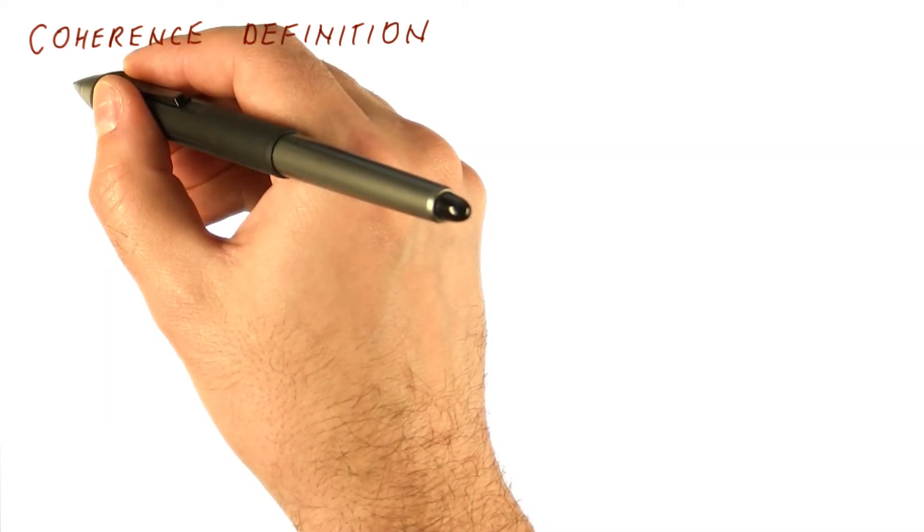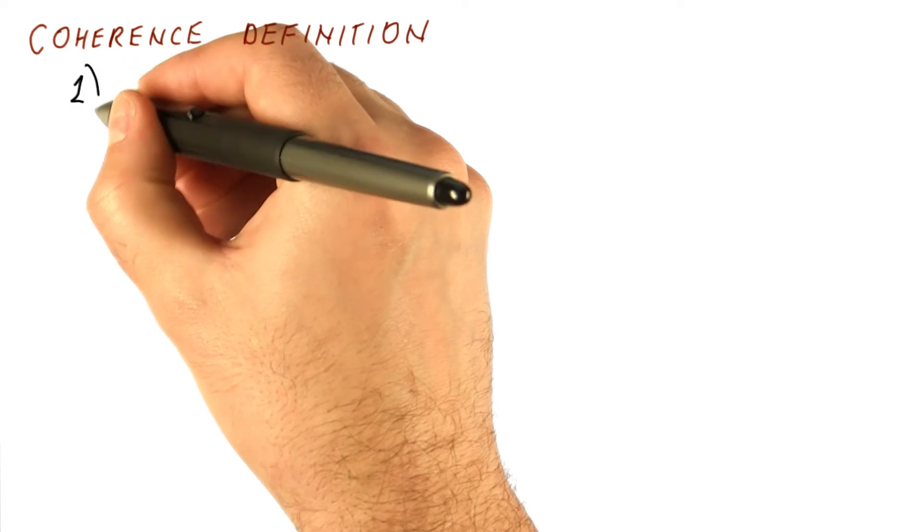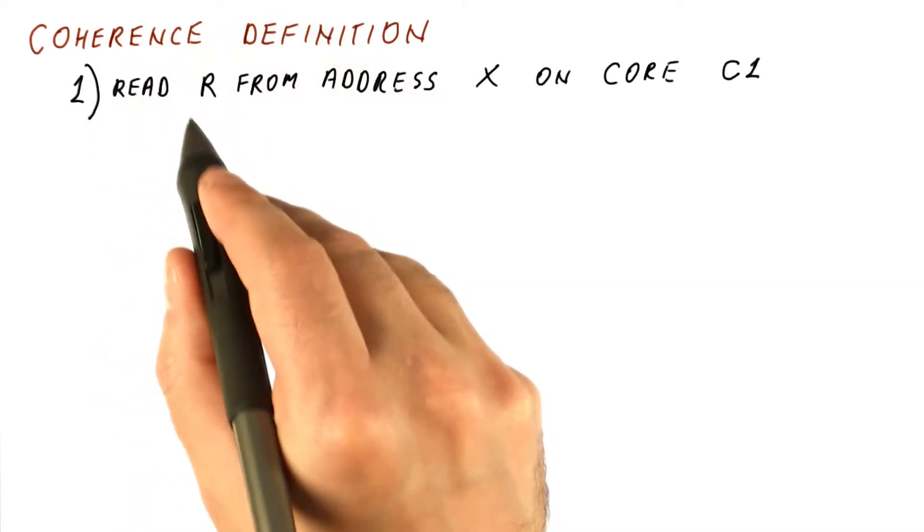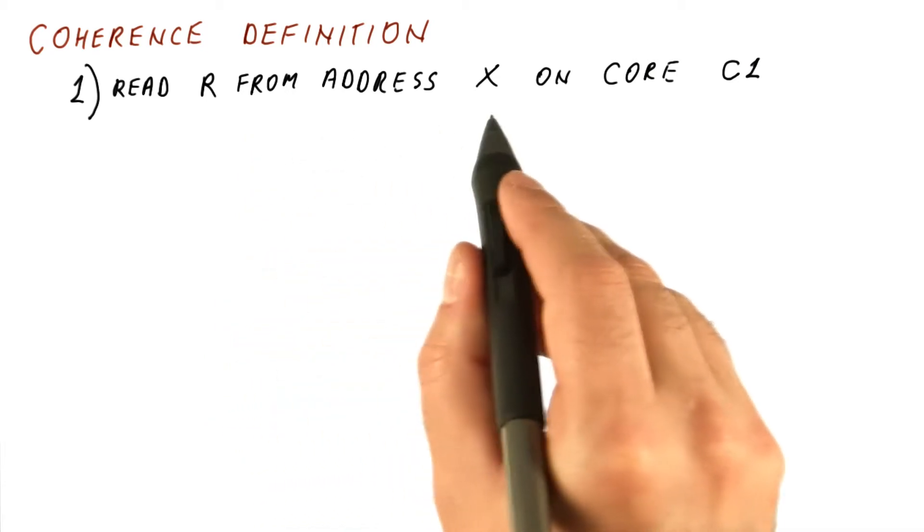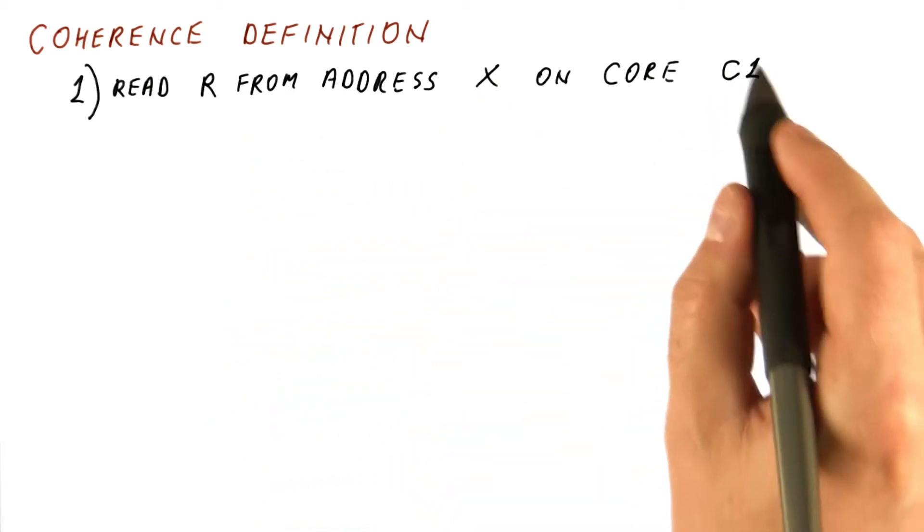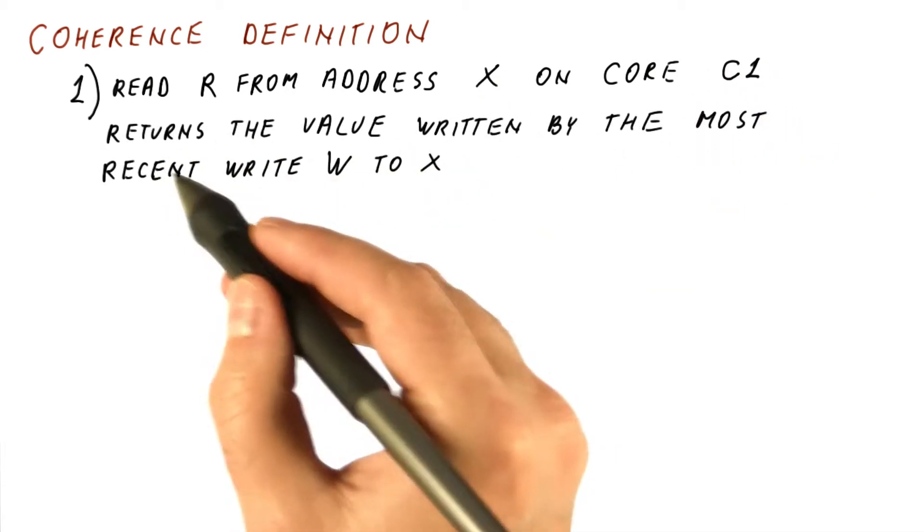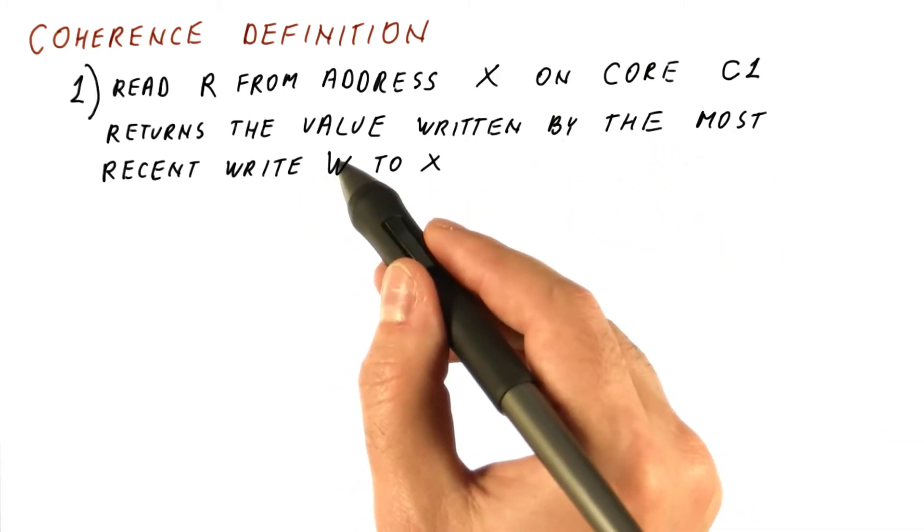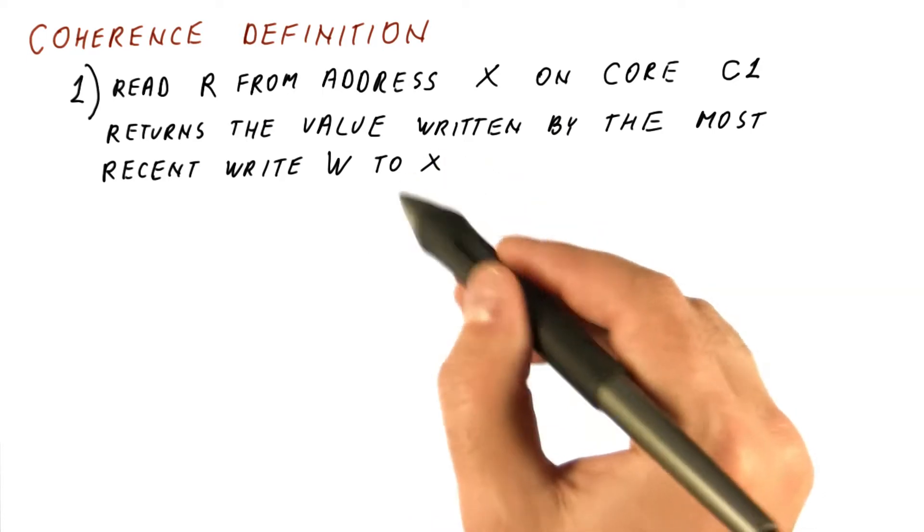There are three requirements for coherence. The first one says that the read, let's call that read r, from some address x on some core c1 will return the value written by the most recent write, let's call that write w, to the same location.